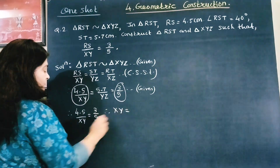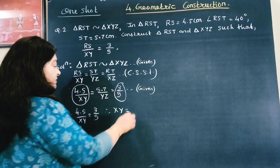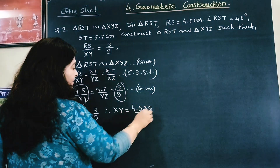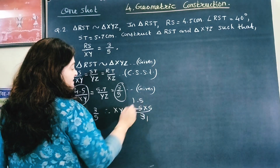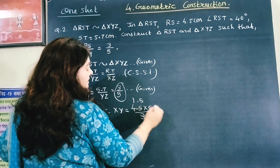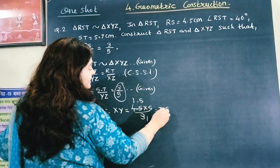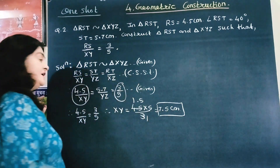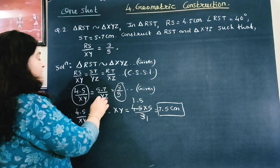From 4.5 upon XY equals 3 upon 5, XY equals 4.5 × 5 upon 3, which gives XY = 7.5 cm.